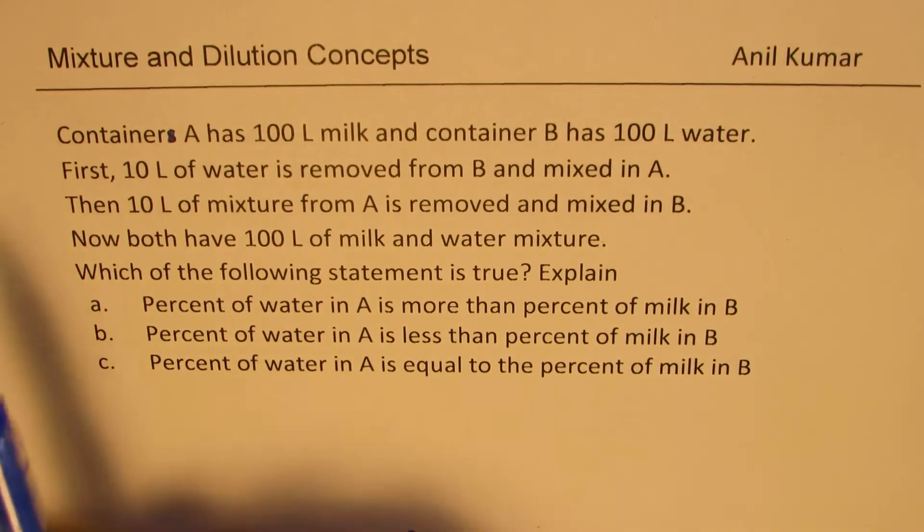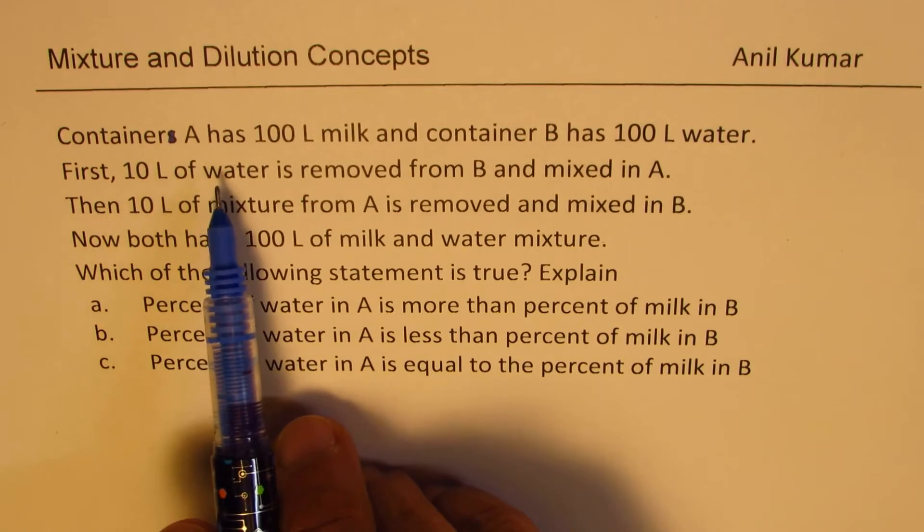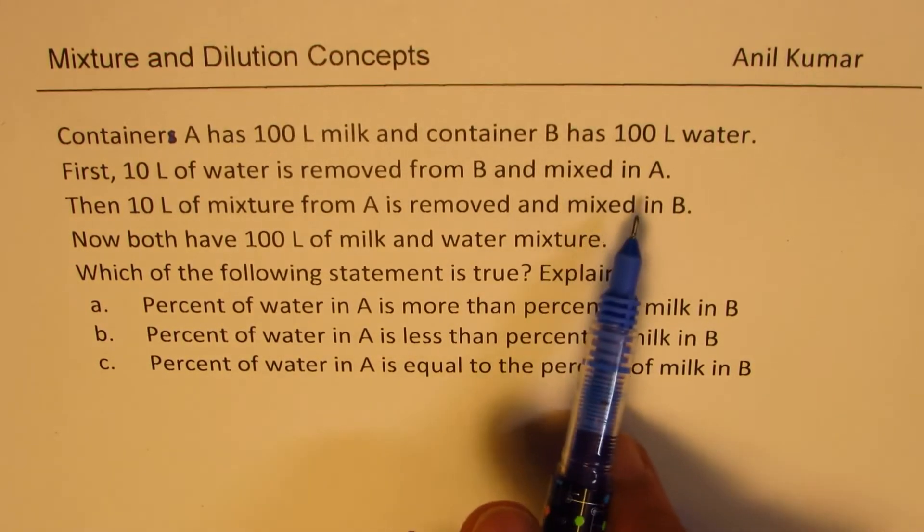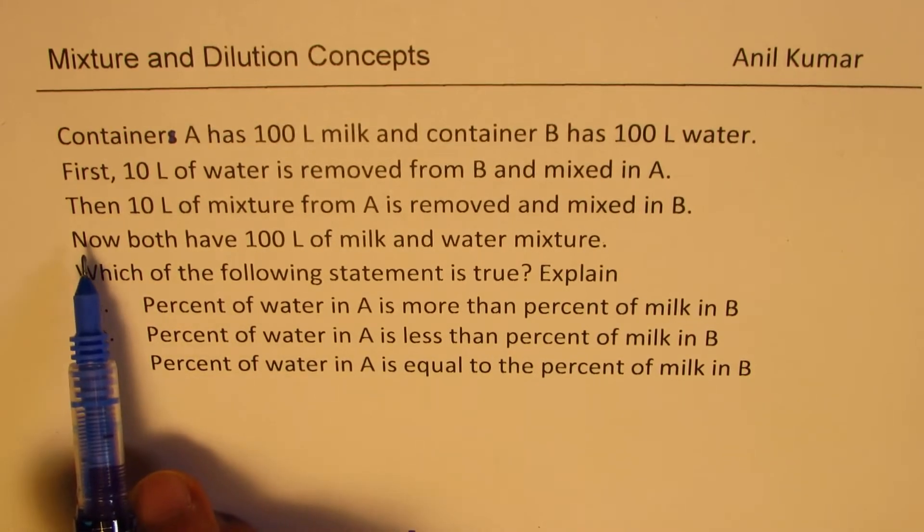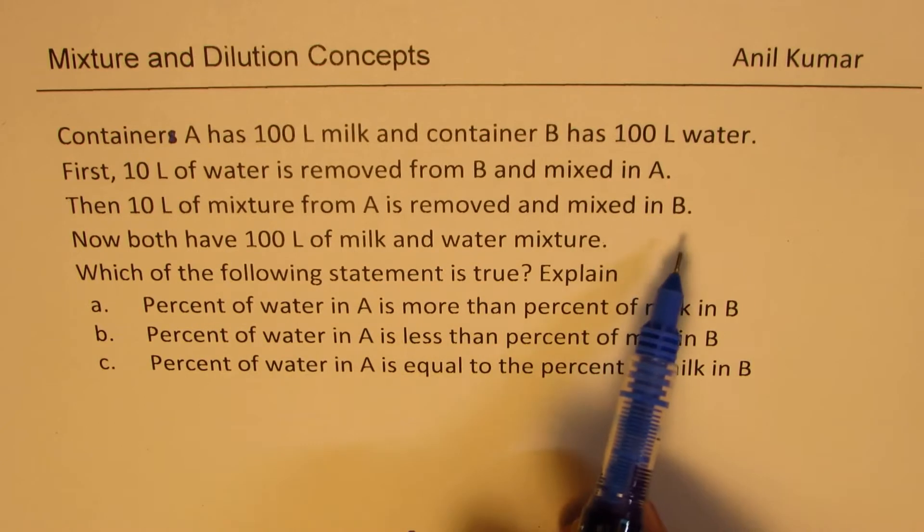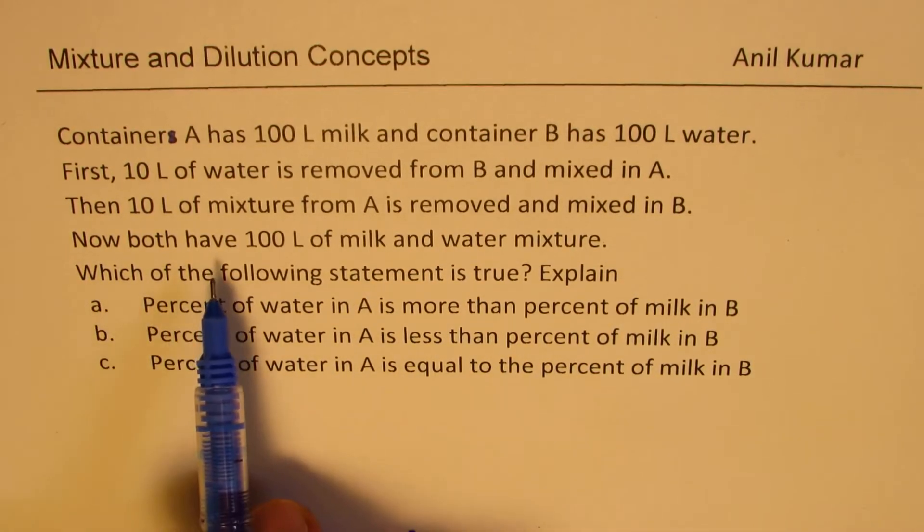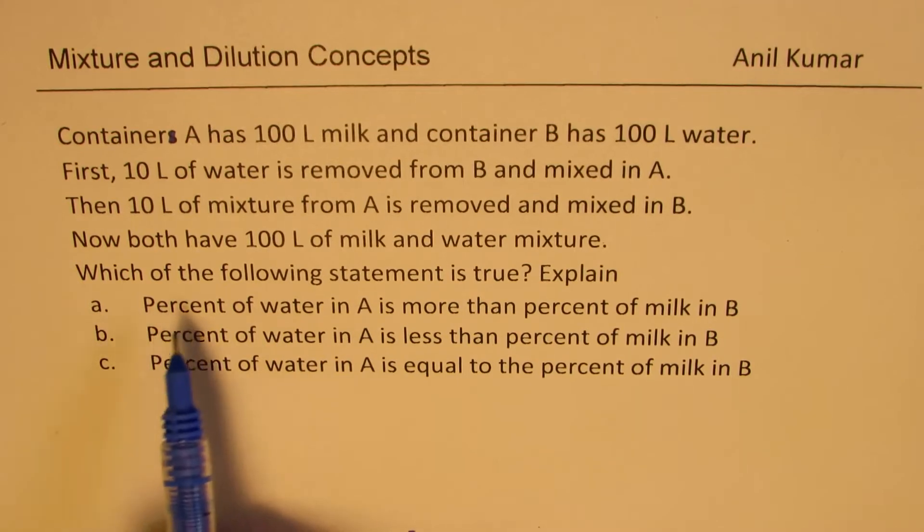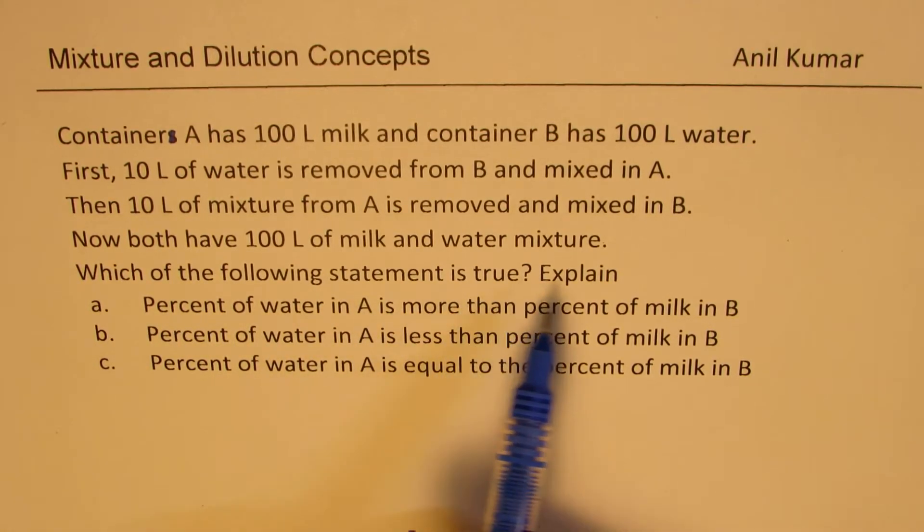The question here is container A has 100 litre milk and container B has 100 litre water. First 10 litre of water is removed from B and mixed in A. Then 10 litre of mixture from A is removed and mixed with B. Now both have 100 litre of milk and water mixtures. Which of the following statement is true? Explain.